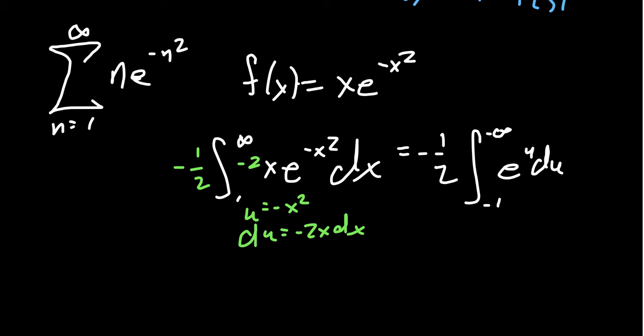The antiderivative of e to the u. Actually, let me actually switch the bounds right here. Because we do have this negative sign in front anyways. So switching the bounds, we end up with 1 half the integral from negative infinity to negative 1 of e to the u du. And therefore, if we go with this, the antiderivative of e to the u is itself.